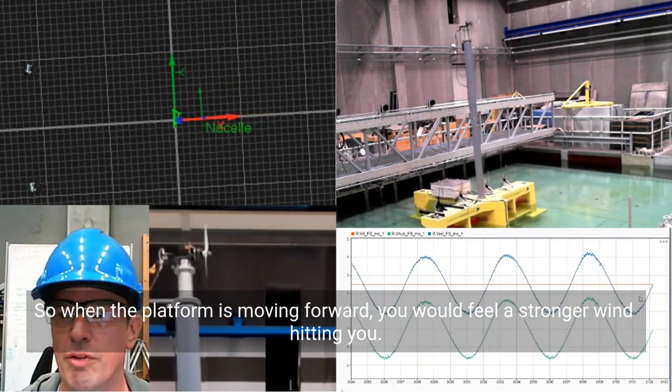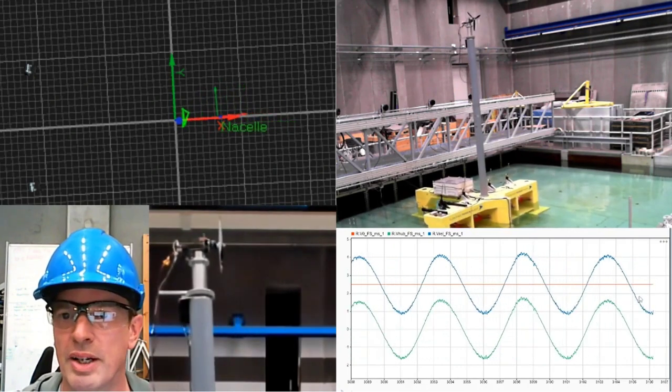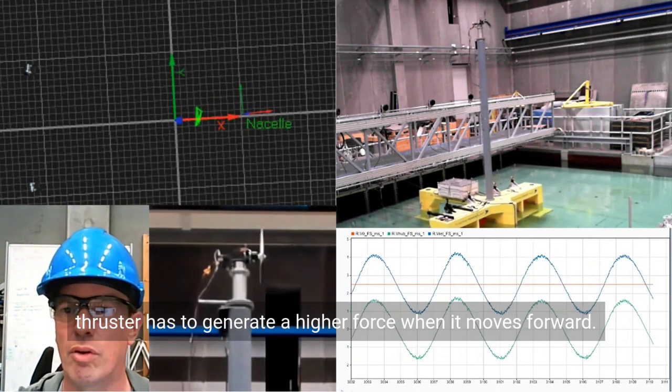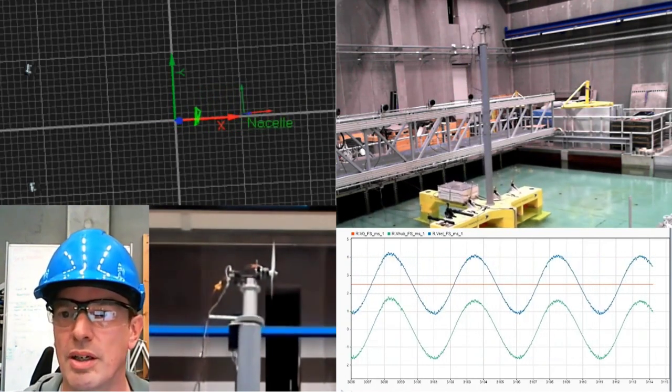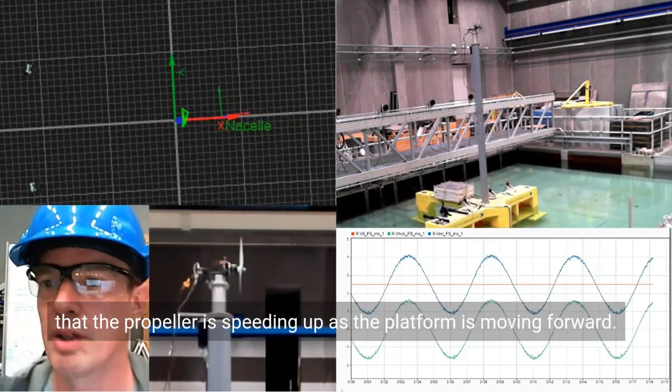That is the velocity that you would feel if you stand up at this nacelle. So when the platform is moving forward, you would feel a stronger wind hitting you. So the wind thruster has to generate a higher force when it moves forward. That is what you can see that the propeller is speeding up as the platform is moving forward.